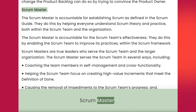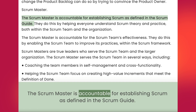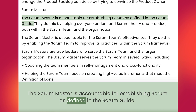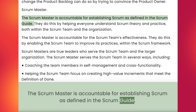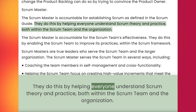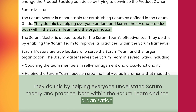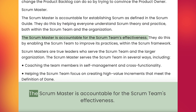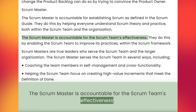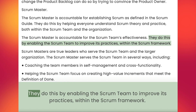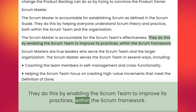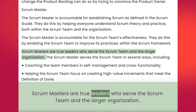Scrum Master. The Scrum master is accountable for establishing Scrum as defined in the Scrum Guide. They do this by helping everyone understand Scrum theory and practice, both within the Scrum team and the organization. The Scrum master is accountable for the Scrum team's effectiveness. They do this by enabling the Scrum team to improve its practices within the Scrum framework. Scrum masters are true leaders who serve the Scrum team and the larger organization.